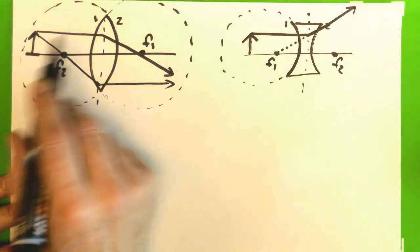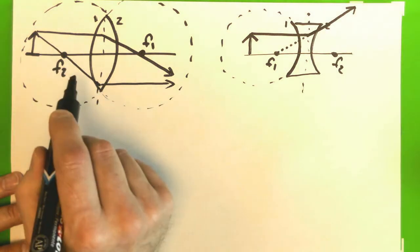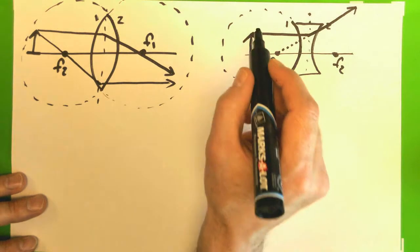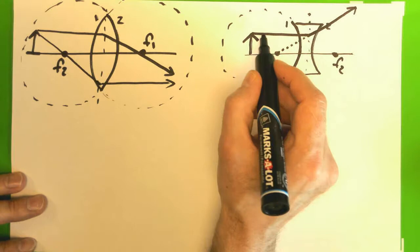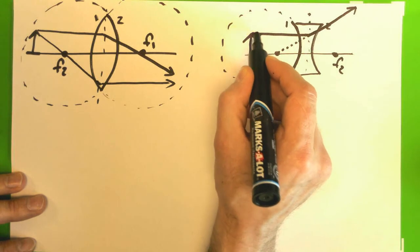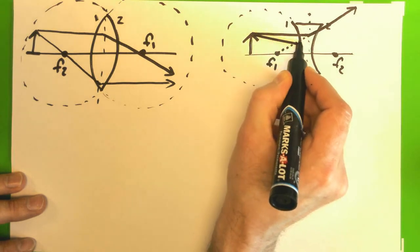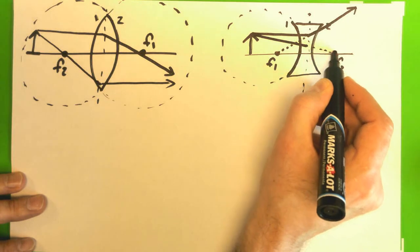And in this case that means associated means goes through that point, and associated over here on diverging lens means goes away from that point. Now we have similar adjustments for our focal ray. So here we have a ray that's going to go through the second focal point. That's over there. So it's got to go towards it.